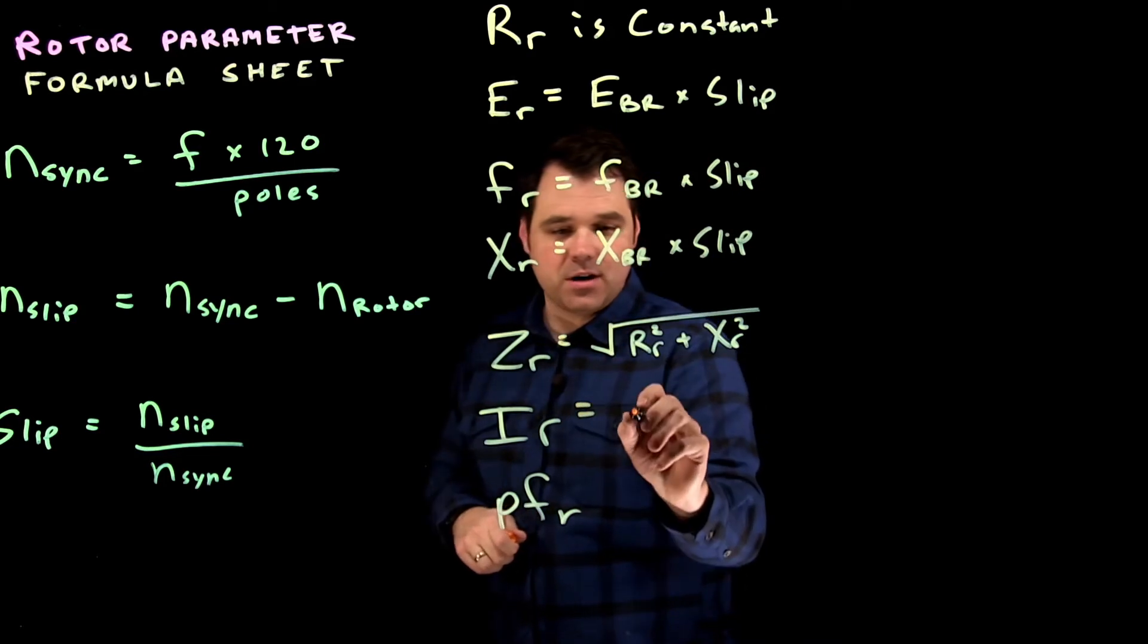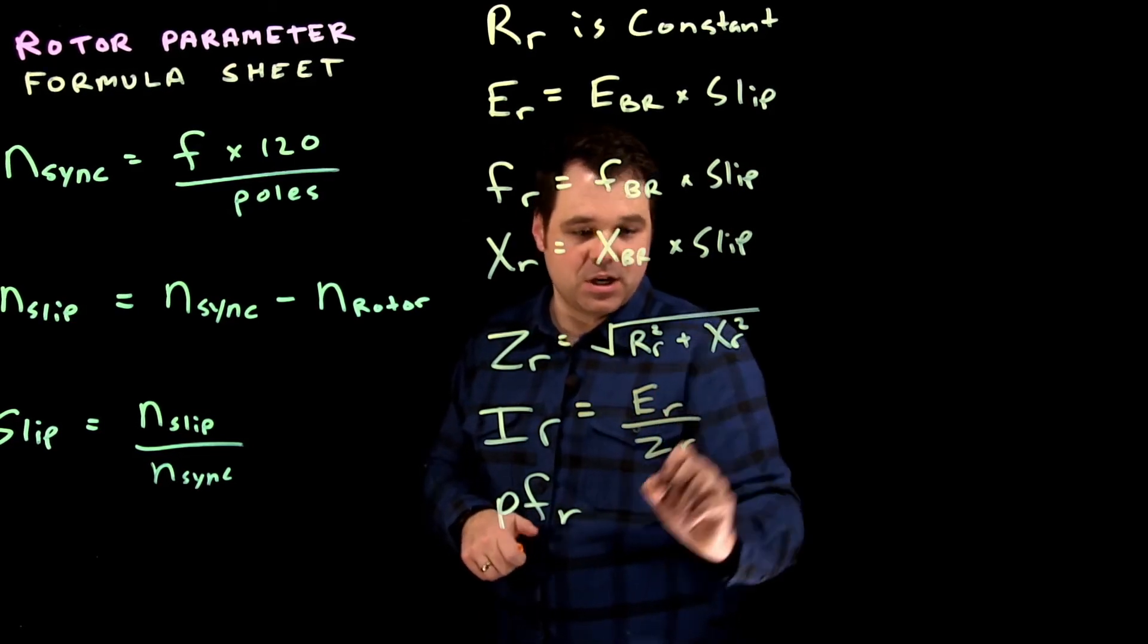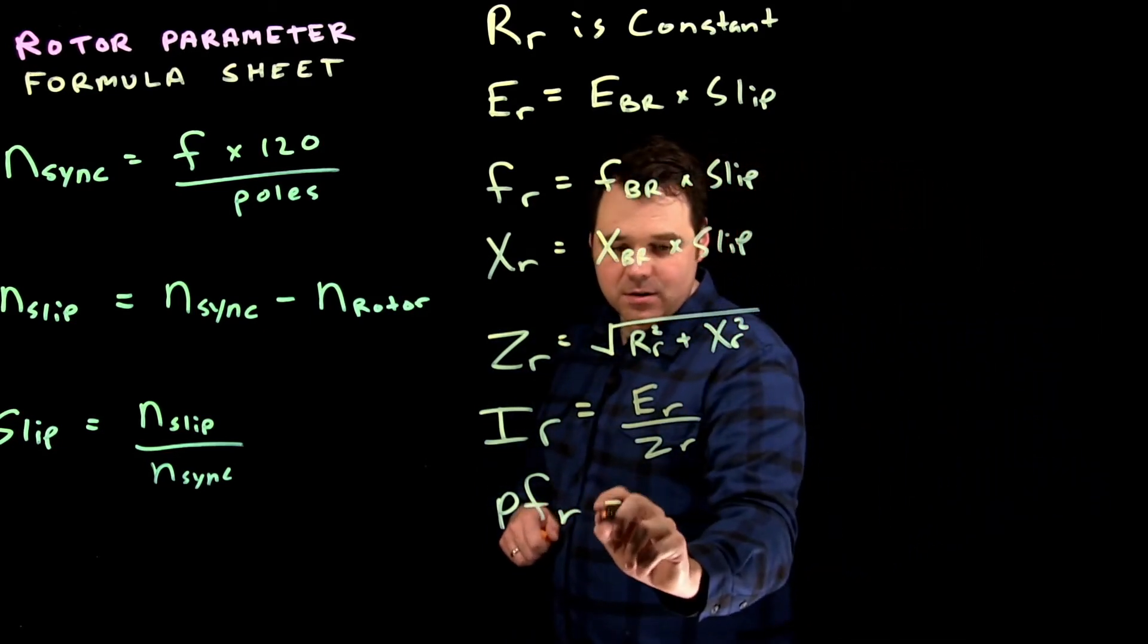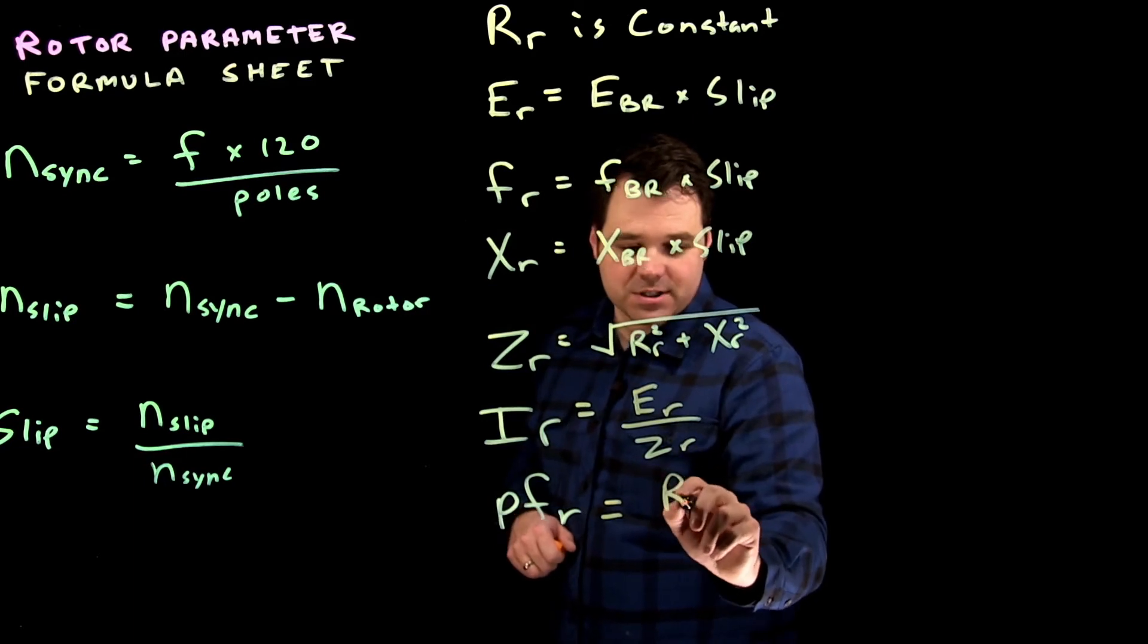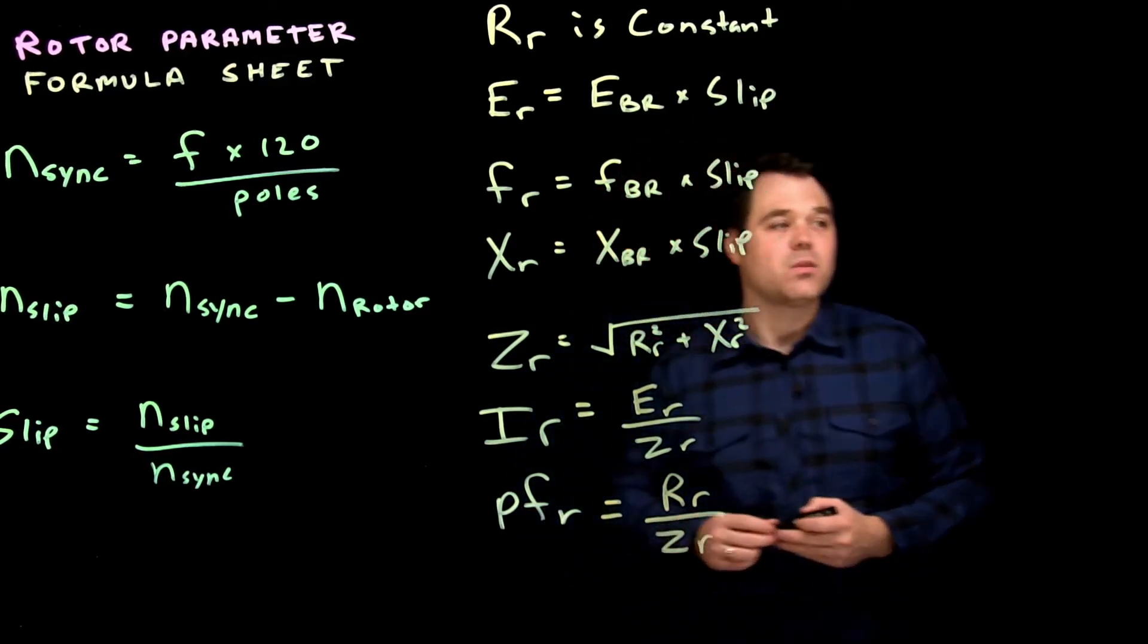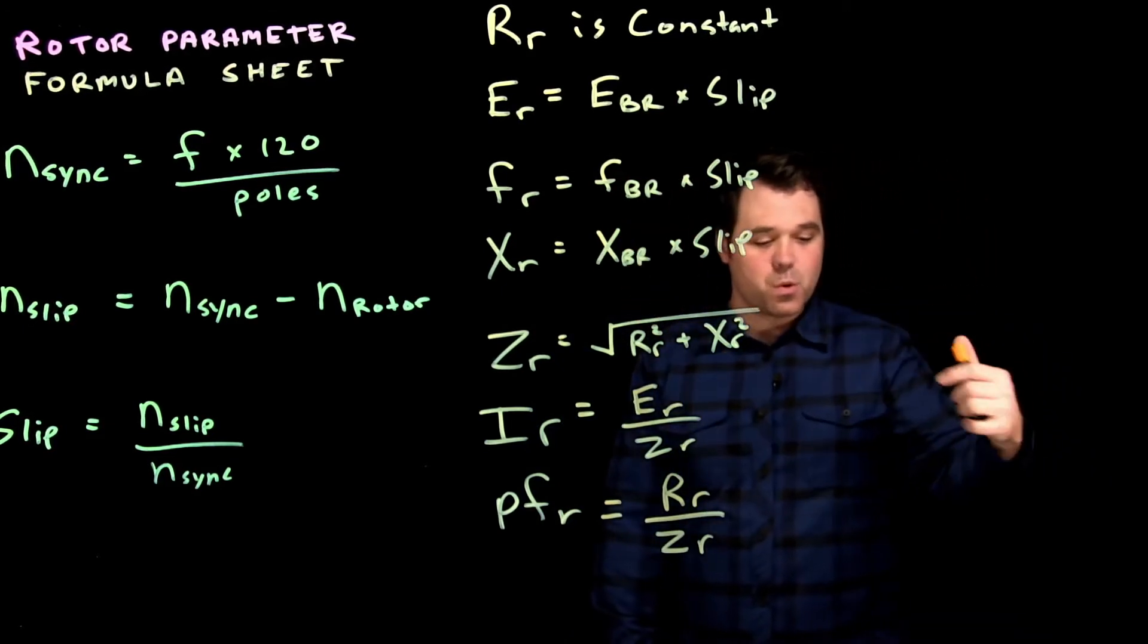Same thing with current here, we're going to go voltage of the rotor divided by impedance of the rotor - classic Ohm's law, gotta love it. Then we have power factor. Our power factor of the rotor is the resistance of our rotor divided by the impedance of our rotor. So the in-phase component and the hypotenuse of that rotor triangle.